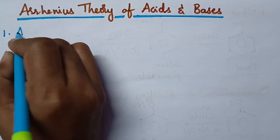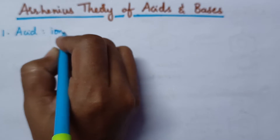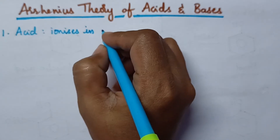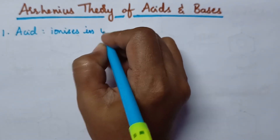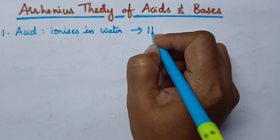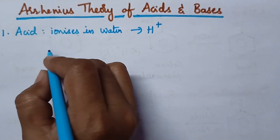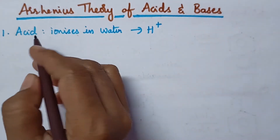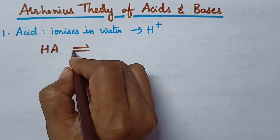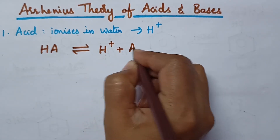According to Arrhenius, acid is a substance that ionizes in water and produces H+ ions. Let us see how an acid ionizes in water. For example, let us consider the general formula of an acid HA. It ionizes in water and thus produces H+ ions and A- ions.